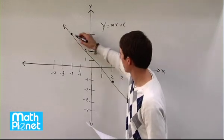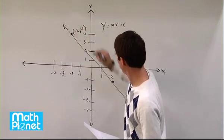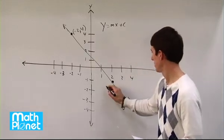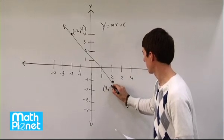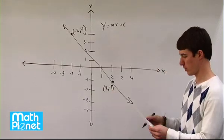Those two points, it looks like, are negative two, four, and two, comma, negative one. So x is two, y is negative one.